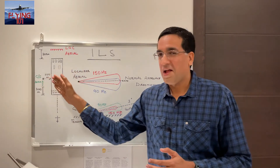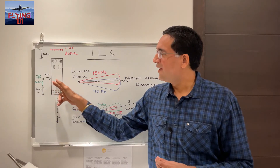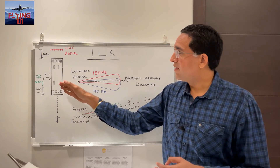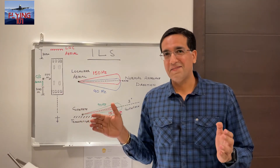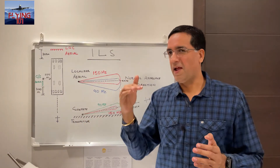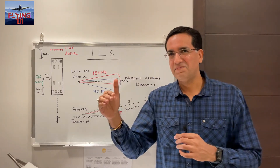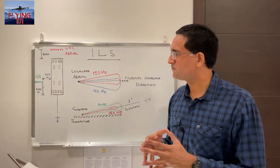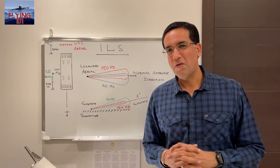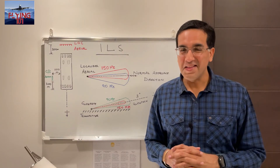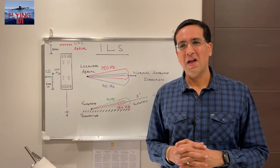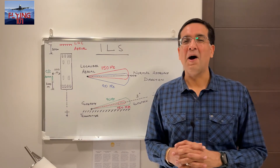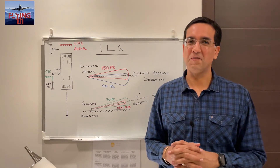We also have the glide slope aerial, which is next to the touchdown point where the aircraft touches down on the runway. Its job is to provide guidance in the vertical plane — to bring the aircraft down at the correct height all the way to landing. That was a high-level overview of the Instrument Landing System, its components, and how it guides pilots when positioning an aircraft to land.